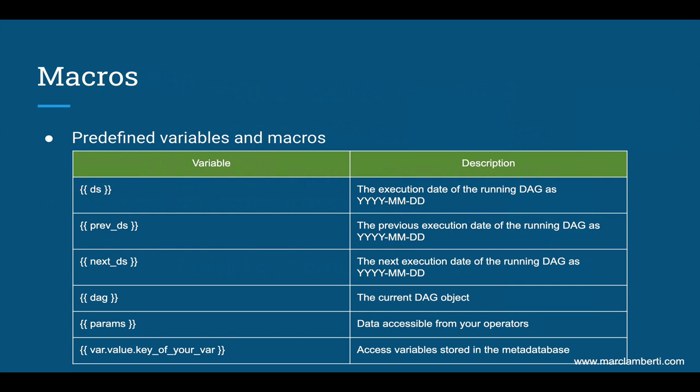prev_ds and next_ds give you respectively the previous and next execution date of your DAG. DAG is the DAG object. Params are the parameters that you can define in specific operators as we will see later. And finally, the notation var dot is how you can access the variables we have seen earlier in your templates.